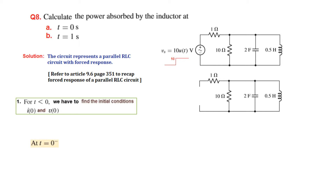From here we can see that there was no input before t equal to 0, so no current is flowing in the circuit and therefore no voltage across the circuit. We can say that at t equal to 0 minus, the inductor current i_L(0−) is 0 ampere. Since the elements are in parallel, the capacitor voltage and the inductor voltage are the same, so the inductor voltage equals the capacitor voltage equals 0 volt.